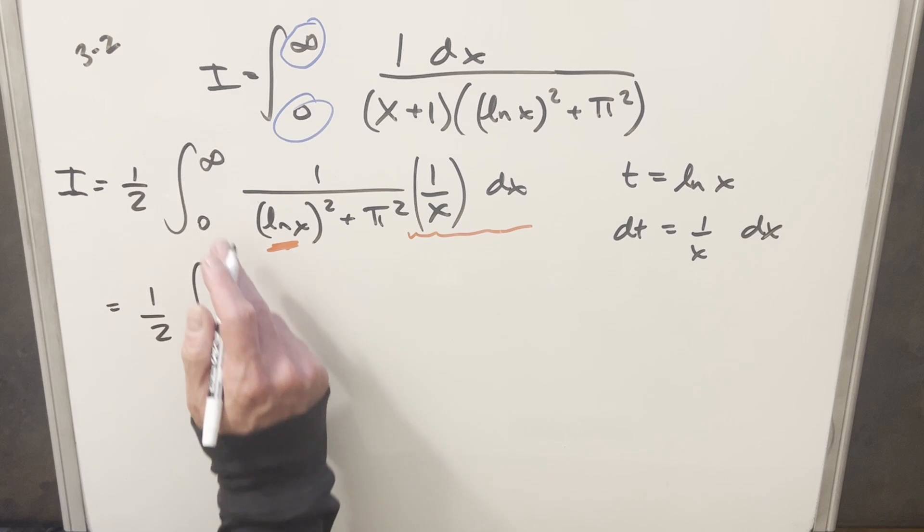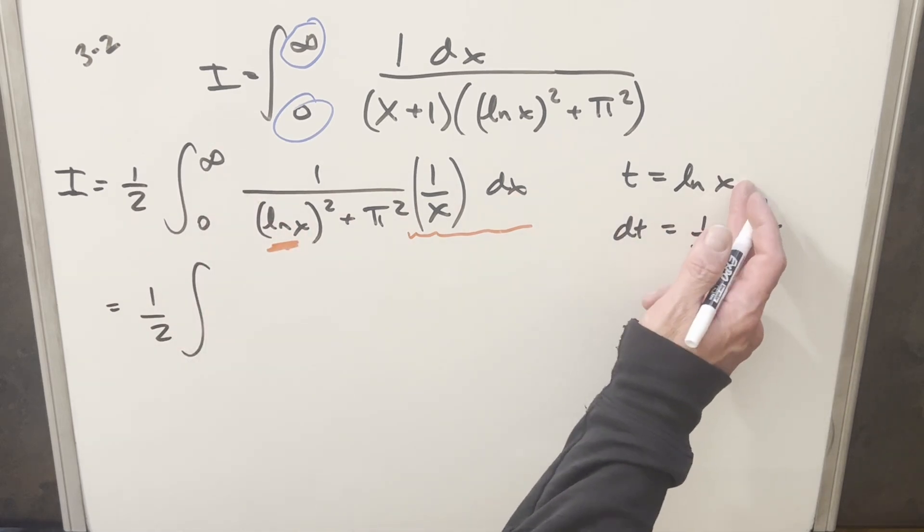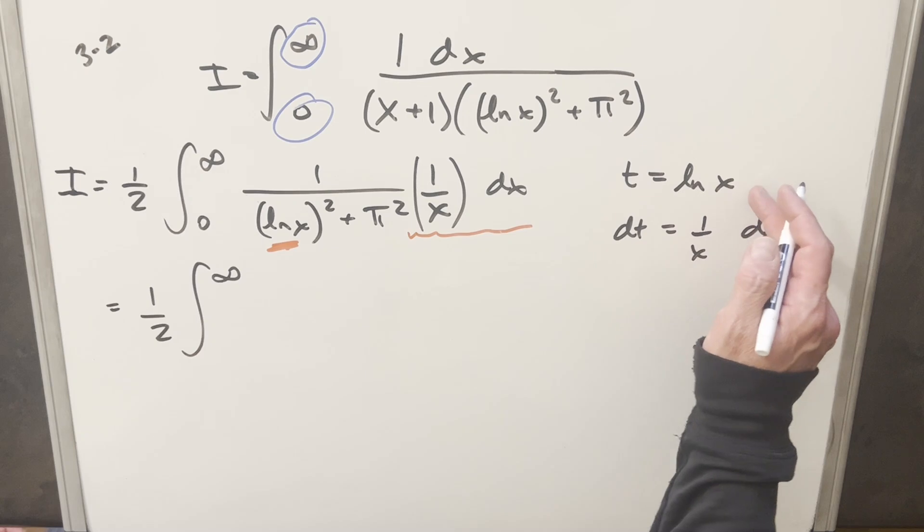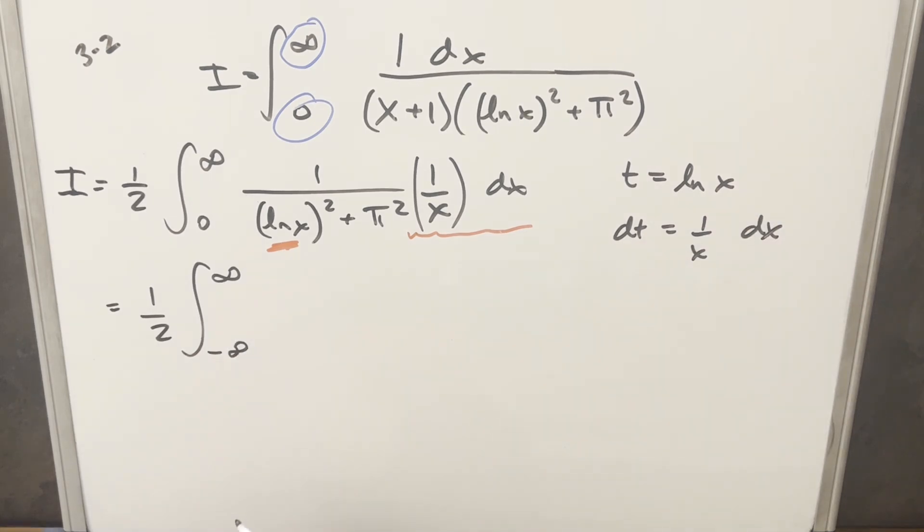And so we'll just go ahead with this. We'll have our 1 half in front. First, when we plug infinity in there, t is still going to be going to infinity. And then when we look at 0 here, natural log of 0, that's going to happen when we're going to minus infinity. Then we're running all this. This over here is our dt. So we're going to have, I can write this as dt over t squared plus pi squared.